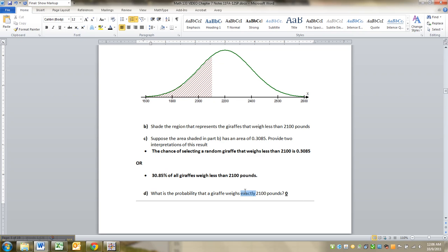Right? Again, that word exact is talking about the line that's right there at 2,100. Well, the line doesn't have an area, therefore, it doesn't have a probability. So if it said 2,100 to 2,101, that would be different, right? But it doesn't say that. It says 2,100 exactly. That's zero.